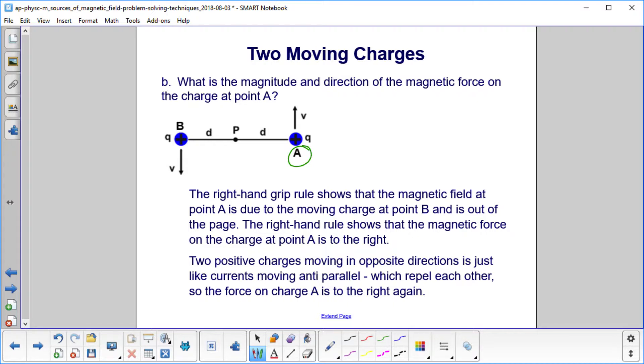The right-hand grip rule shows that the magnetic field at point A, due to this moving charge here, use your right-hand grip rule, and you'll find that the magnetic field is out of the page due to the charge at point B. So that's the magnetic field.